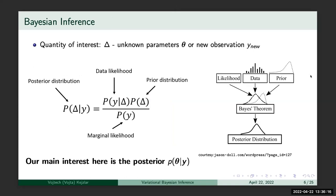So how does Bayesian inference work? Let's say I have some quantity of interest, which can be a population parameter like a proportion or average, or a prediction of new observations. The way Bayesian inference works is that I take data, some model for the data expressed through data likelihood, and my prior domain knowledge expressed through prior distribution, toss it into the pot called Bayes theorem, and get my updated knowledge in terms of the posterior distribution.